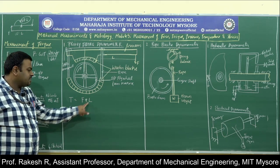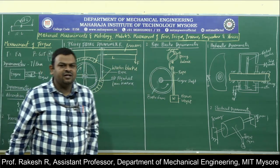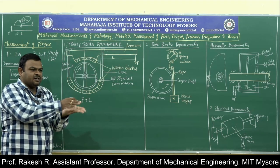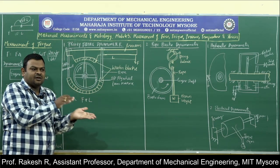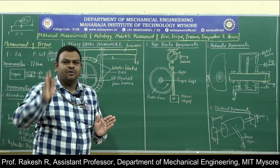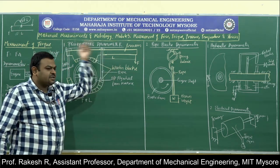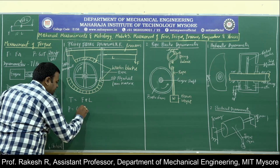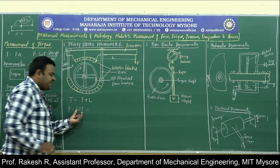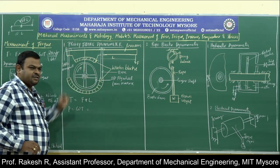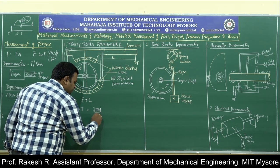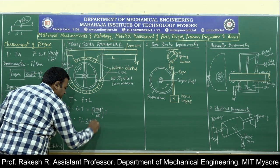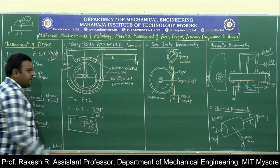If you want more torque, either increase force or increase the length of the lever arm. However, with longer length, deflection takes place, and if RPM is beyond a limit, centrifugal forces may affect the system. So T = F × L and power P = ω × T = (2πN/60) × F × L. This is the power obtained in the Prony brake dynamometer.